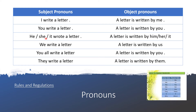He, she, it wrote a letter — in passive form: A letter is written by him, her, it. We write a letter becomes A letter is written by us — so 'we' changes to 'us'. He/she/it changes to him/her/it.